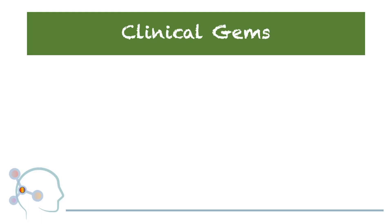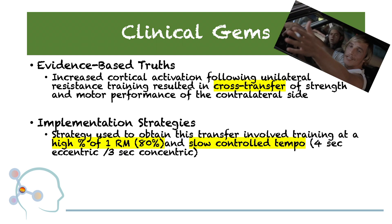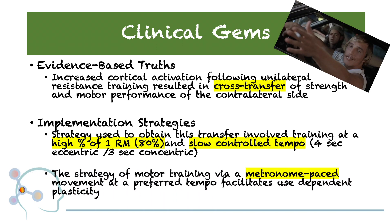Now it's time for Clinical Gems! So what are we walking away with today? Our evidence-based truth: increased cortical activation following unilateral resistance training resulted in a cross-transfer of strength and motor performance of the contralateral side. Please keep in mind that results will vary and are individual and setting dependent. The authors had participants work at a high percentage of a 1-rep max, anywhere between 80% and 85%. All reps were performed at a slow controlled tempo of a 4-second eccentric and 3-second concentric contraction. The strategy of motor training through the use of a metronome-paced movement at a preferred tempo helps to facilitate use-dependent neuroplastic changes.